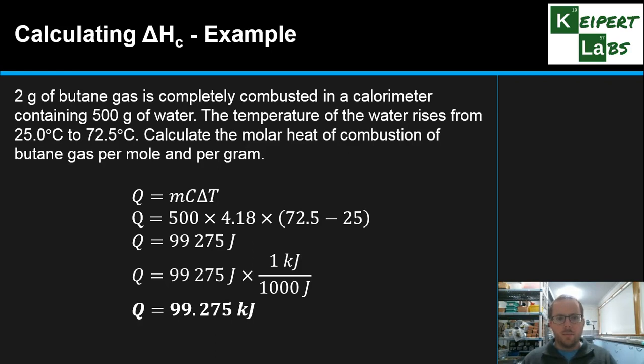All right, so let's have a quick look at an example. Two grams of butane gas is completely combusted in a calorimeter, a container that does the measuring of the heat like we had earlier, which contains 500 grams of water. The temperature of the water rises from 25 Celsius to 72.5 Celsius. Calculate the molar heat of combustion of butane gas per mole and per gram. So we're going to use both of those formulas we just referred to.